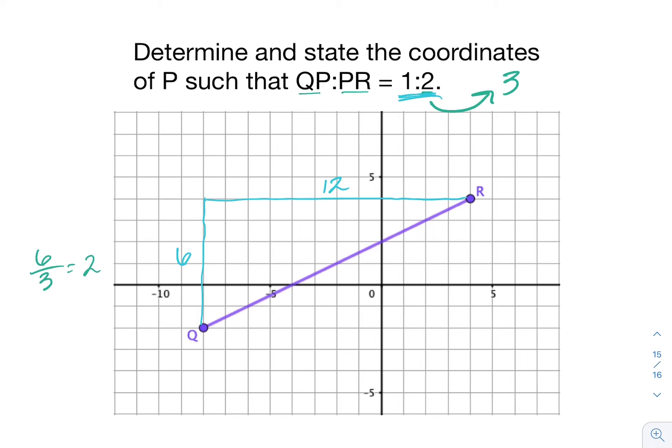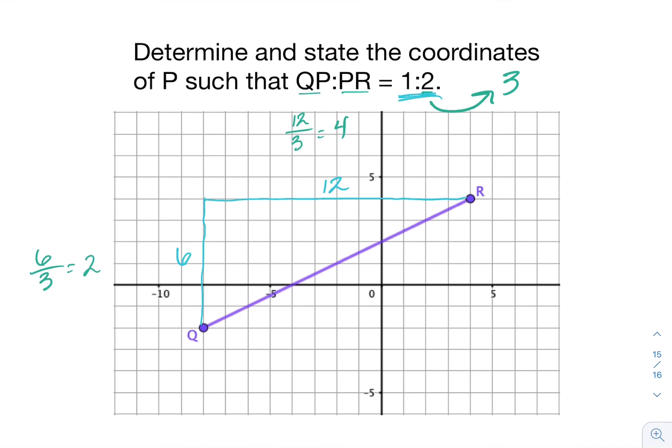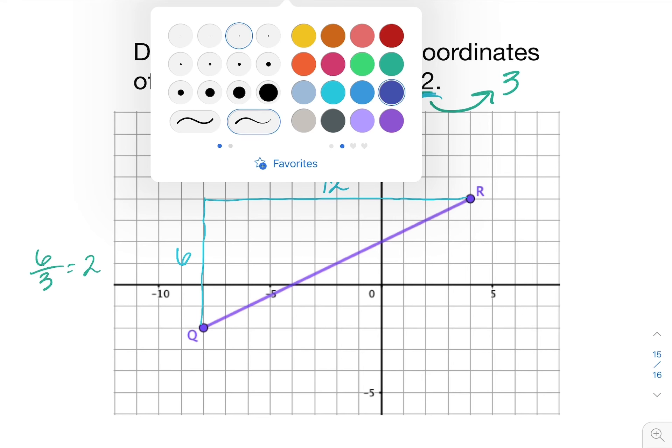Same idea with the horizontal distance, which is 12. I'm going to do 12 divided by 3, which is 4. So my new horizontal distance will be 4.